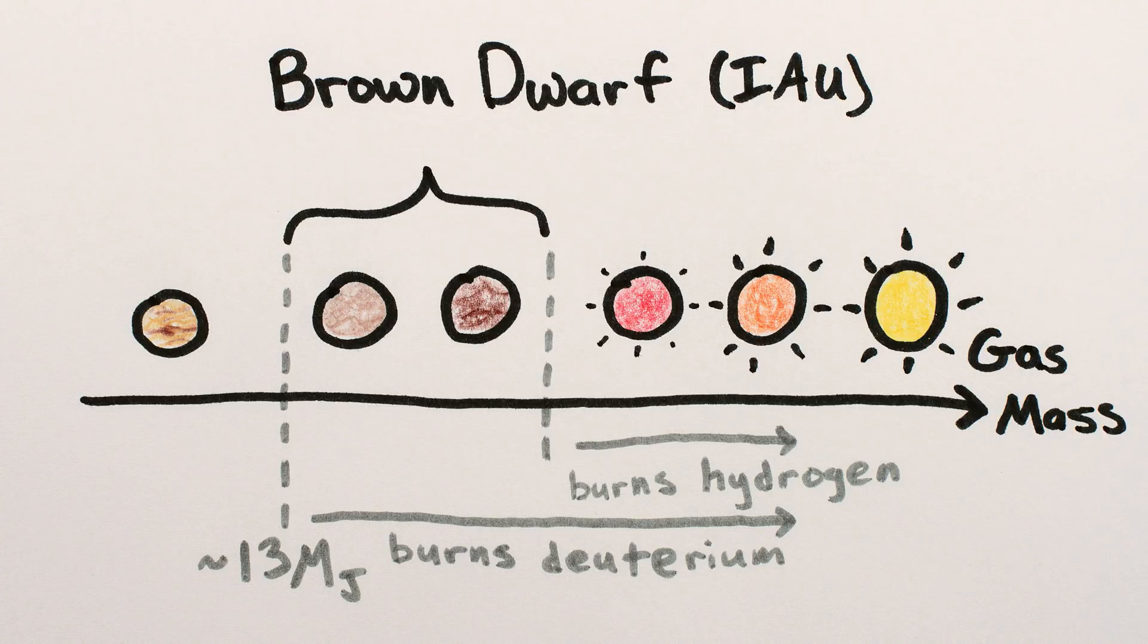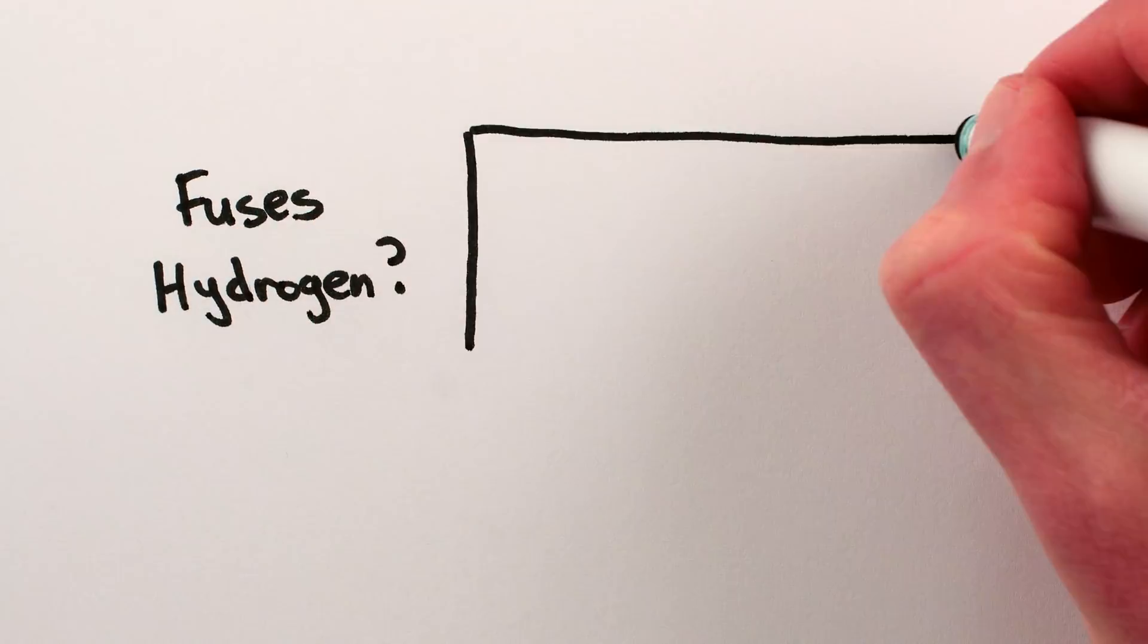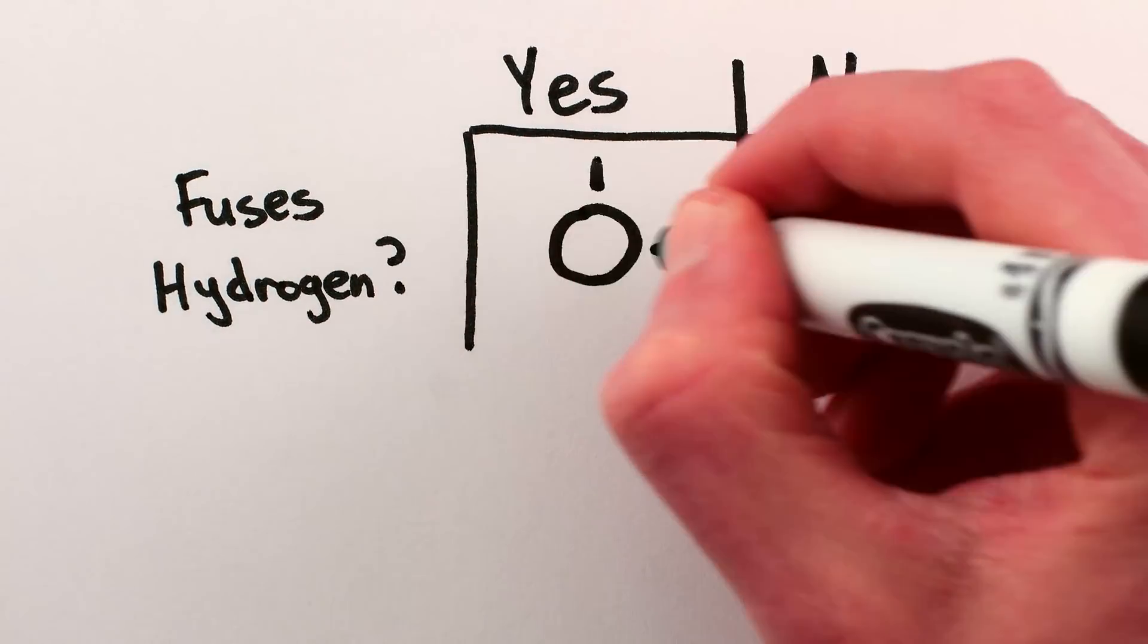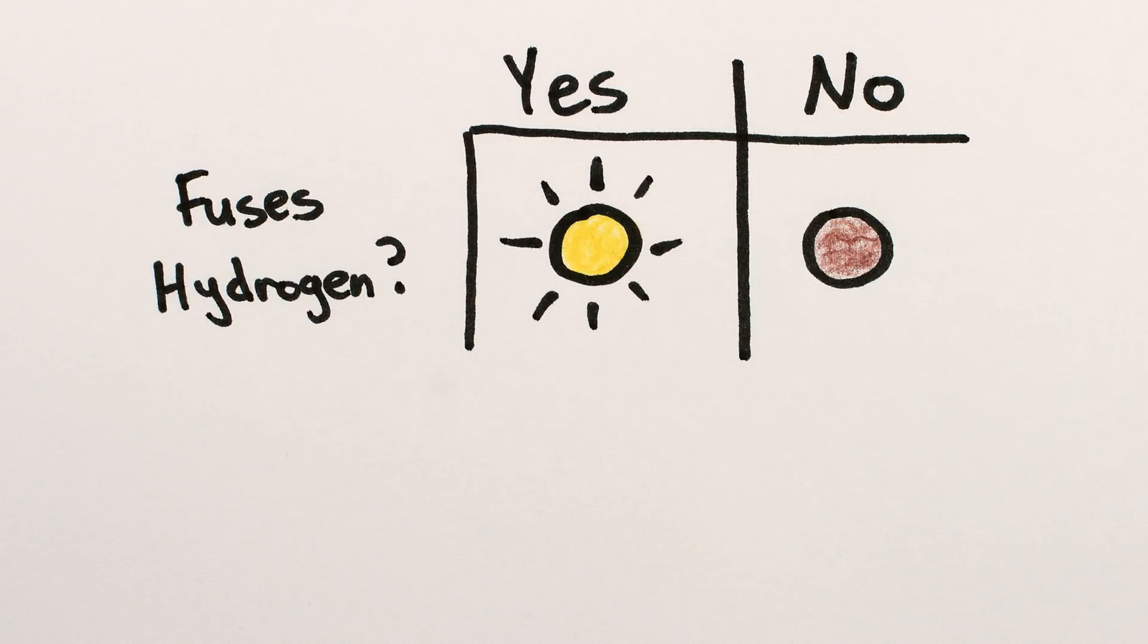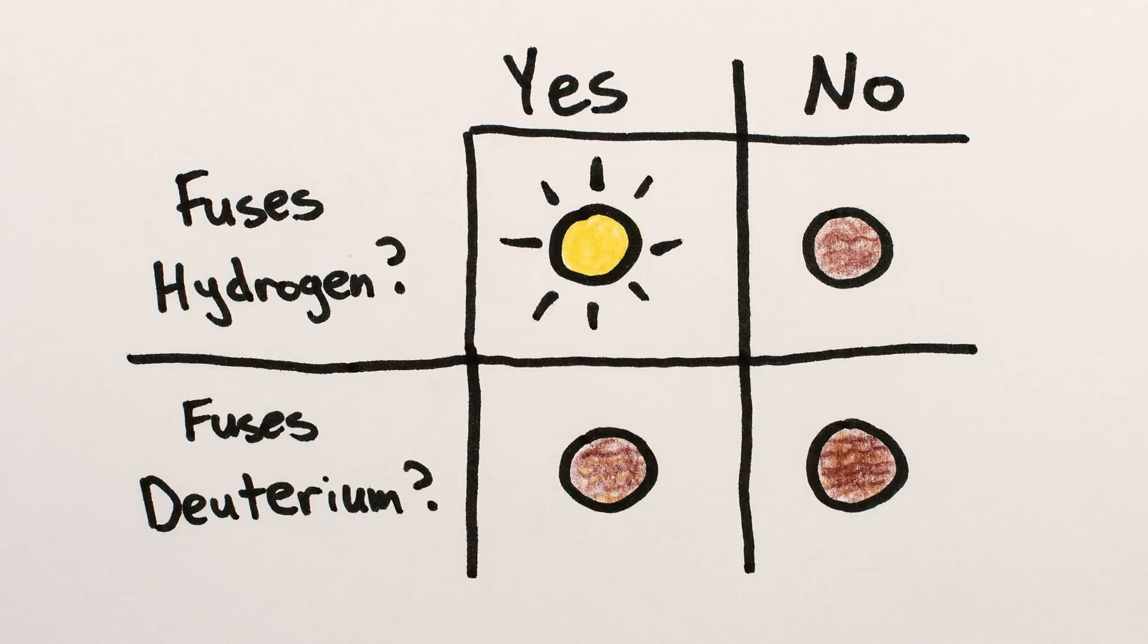However, there's a major problem with this deuterium-burning-based definition. It doesn't make any scientific sense. First, unlike how hydrogen fusion is huge, since it means you can shine brightly for millions or billions of years, burning deuterium doesn't power or affect an astronomical object in any particularly meaningful way, which is probably why you haven't heard much about it.